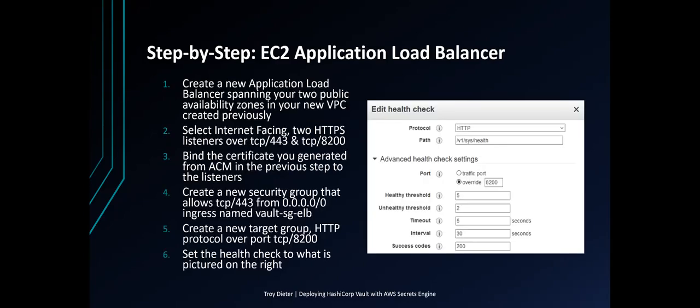Next up is the EC2 Application Load Balancer. Create a new Application Load Balancer under the EC2 section, spanning your two public availability zones and the new VPC created previously. Select internet-facing with two HTTPS listeners over TCP 443 and TCP 8200. Find the certificate you generated from ACM in the previous step and attach it to those listeners.